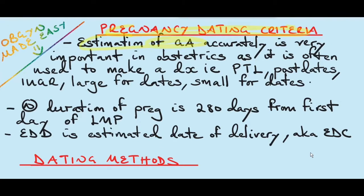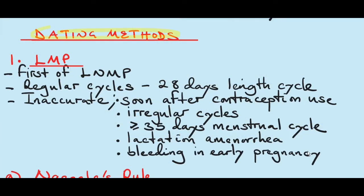Estimation of gestational age accurately is very important in obstetrics because it is often used to make a diagnosis such as pre-term labor, post-dates, intrauterine growth retardation, large for dates, and small for dates. A normal duration of pregnancy is about 280 days from the first day of the last menstrual period, which is equivalent to 40 weeks. So if a pregnancy has lasted more than 40 weeks, it's called a post-dates pregnancy. EDD is estimated date of delivery, also known as EDC, which is estimated date of confinement. So what are the dating methods we use to calculate the gestational age as well as the EDD?